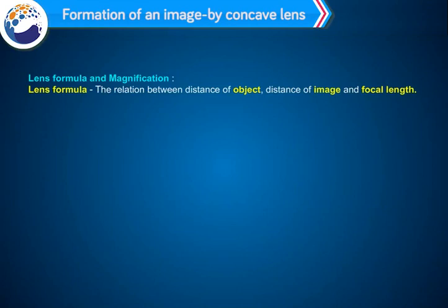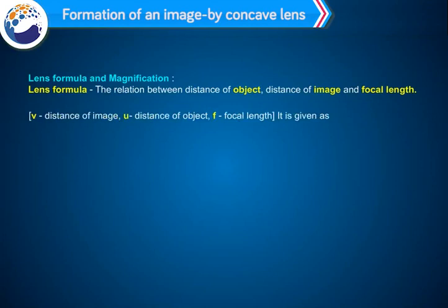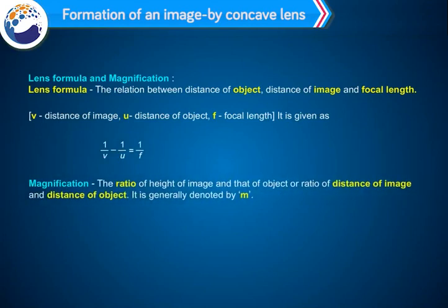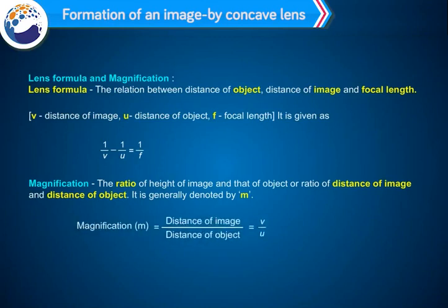Lens formula: the relation between the distance of the object, distance of the image, and focal length is given as: 1/v minus 1/u equals 1/f, where v is the distance of the image, u is the distance of the object, and f is the focal length. Magnification: the ratio of the height of the image to that of the object, or the ratio of the distance of image to distance of object, denoted by m. Magnification m = v/u.